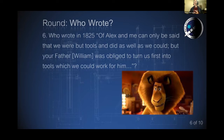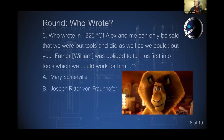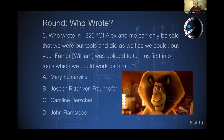Question six: who in 1825 wrote, 'Of Alex and me it can only be said that we were but tools and did as well as we could, but your father William was applied to turn us first into tools which we could work for him'? Was it Mary Somerville, Joseph von Fraunhofer, or John Flamsteed? That's from 1825.